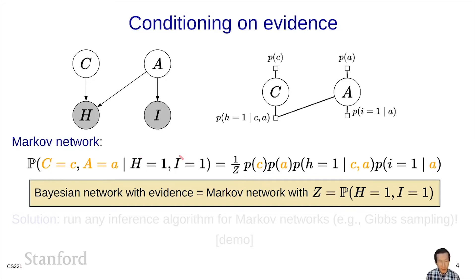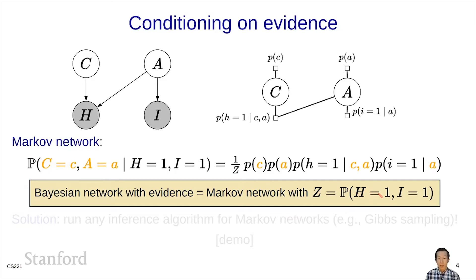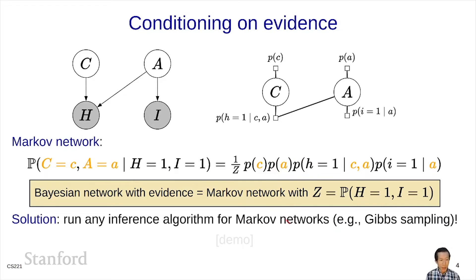This is because a conditional distribution equals the joint distribution divided by the marginal of what you're conditioning on, so z must equal the marginal of the evidence. Nonetheless, this is a Markov network, and we can run any inference algorithm we'd like over it — for example, Gibbs sampling.